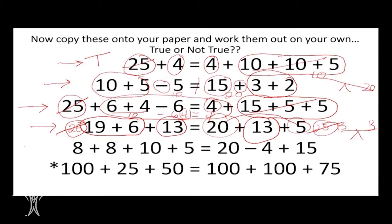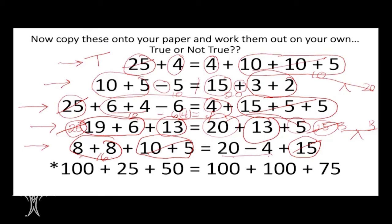Next: 8 plus 8 plus 10 plus 5 is the same as 20 minus 4 plus 15. I see 15 on the right — is there a 15 on the left? Yes — those jump out right away and are balanced. Now I'm left with 8 plus 8 and 20 minus 4. I know my doubles: 8 plus 8 is 16. And 20 minus 4 — I know 10 minus 4 is 6, so 20 minus 4 is 16. Both sides give 16, so this equation is true.